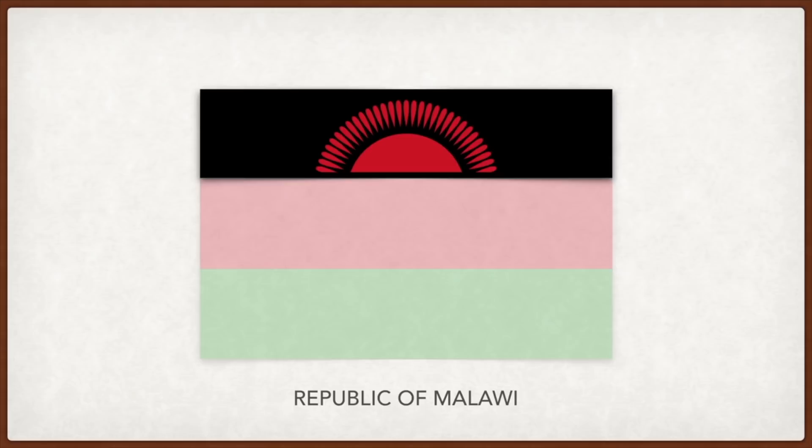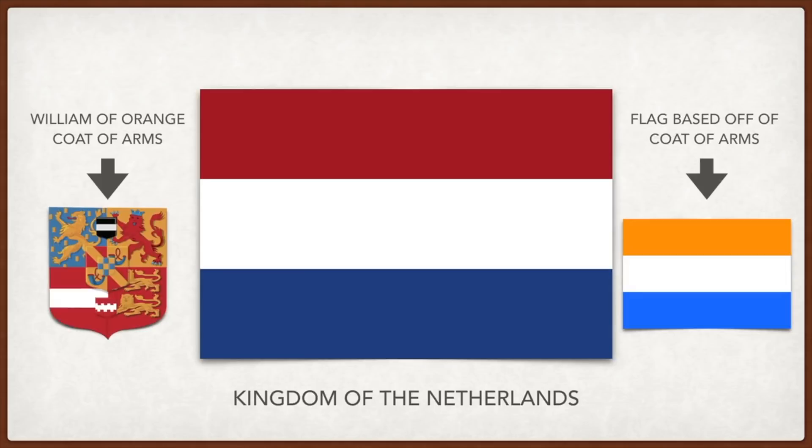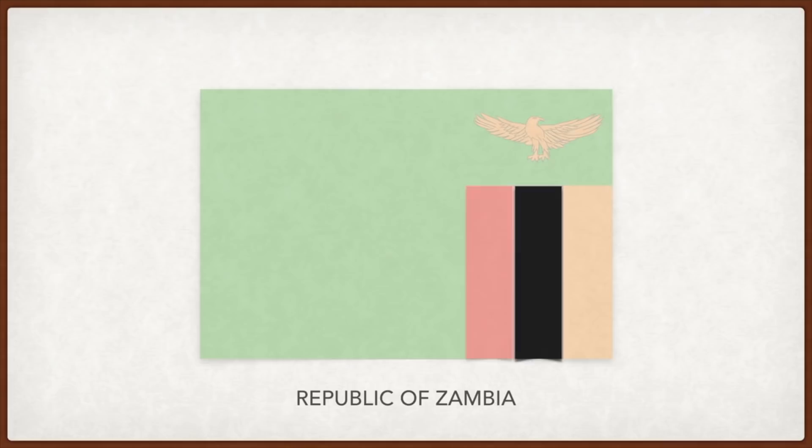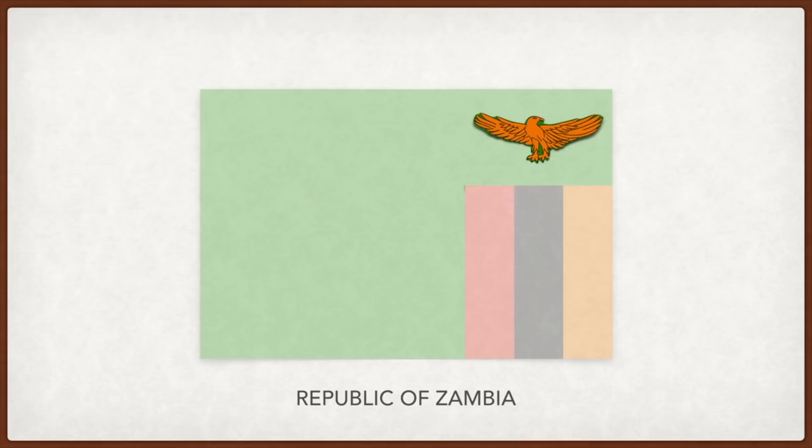The Netherlands: initially the flag was orange, white, and blue in honor of William of Orange, the main leader of the Dutch revolt against Spanish rule. Zambia: green stands for the country's flora, red for the country's struggle for freedom, black for the Zambian people, and orange for natural resources and mineral wealth. The flying eagle represents the people's ability to rise above the nation's problems.